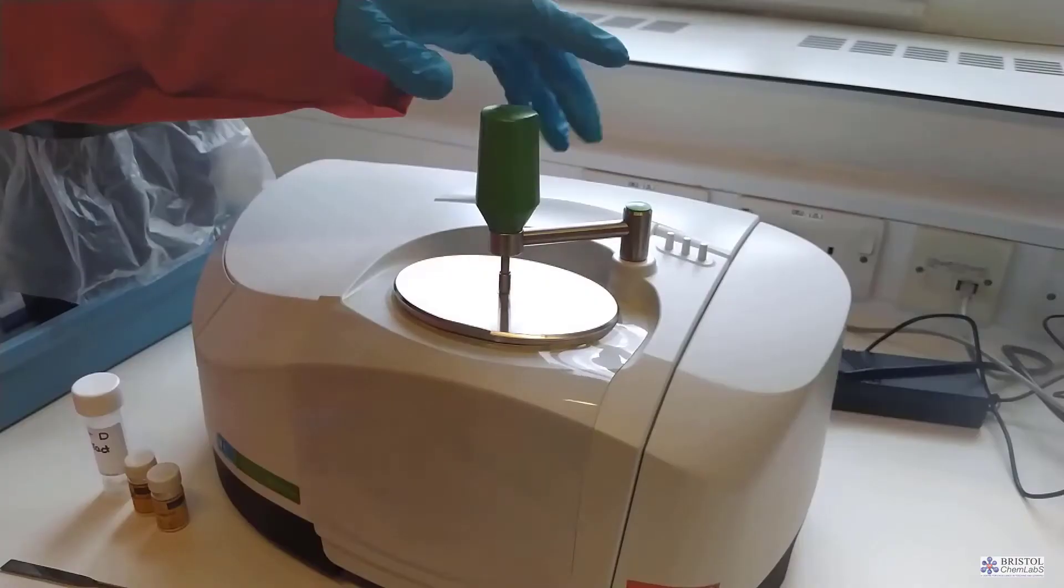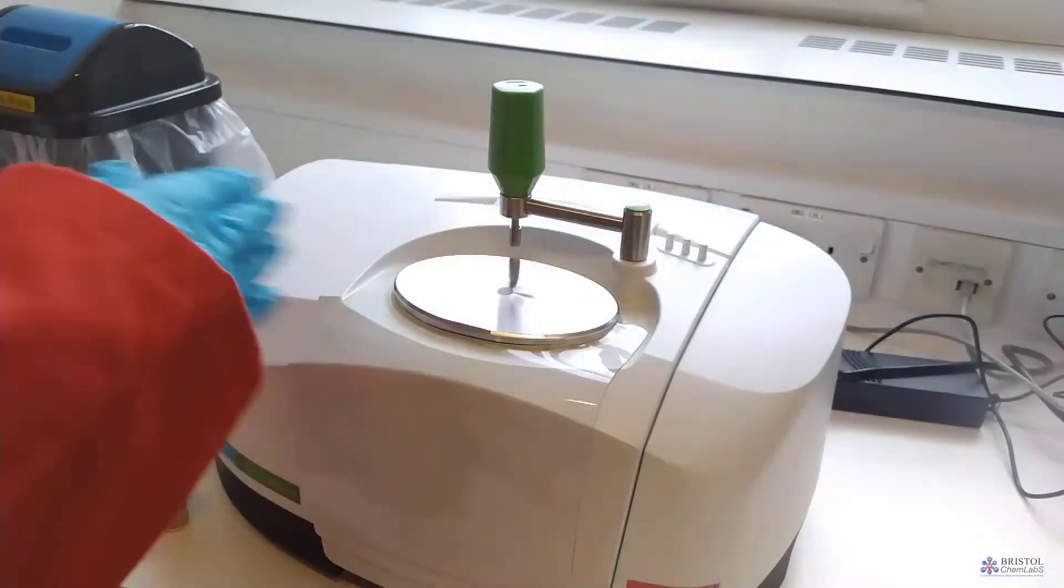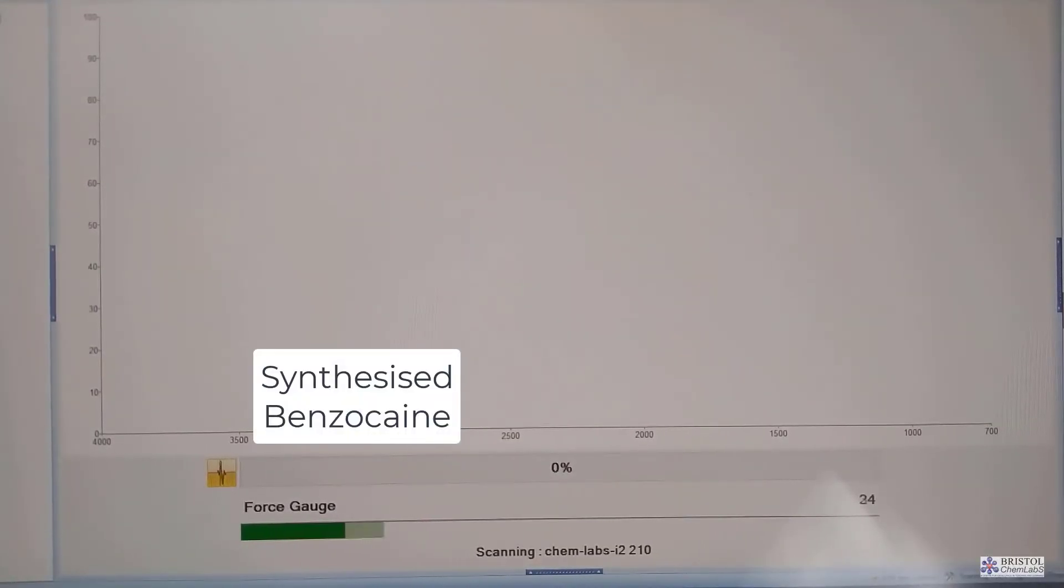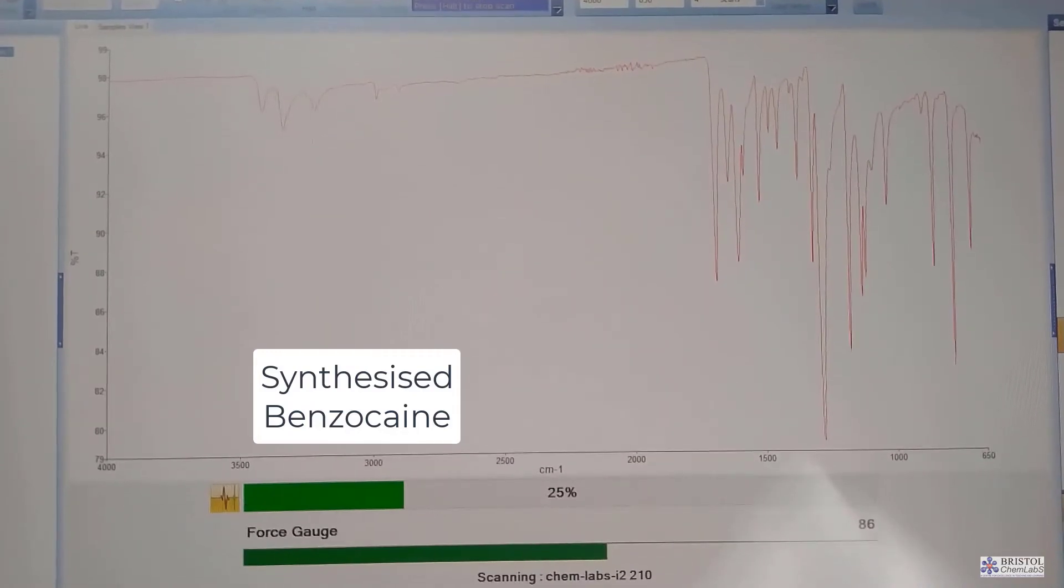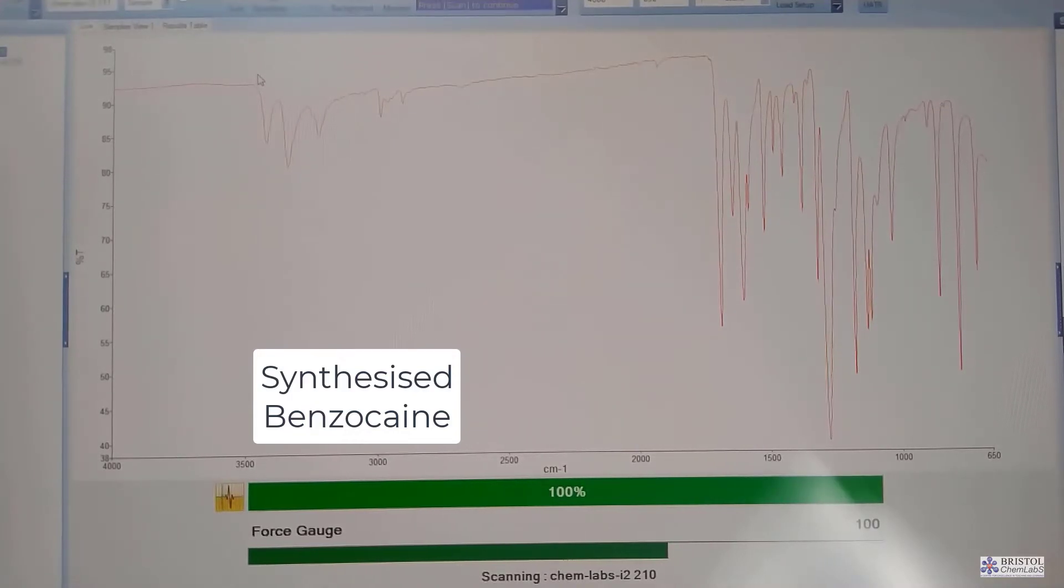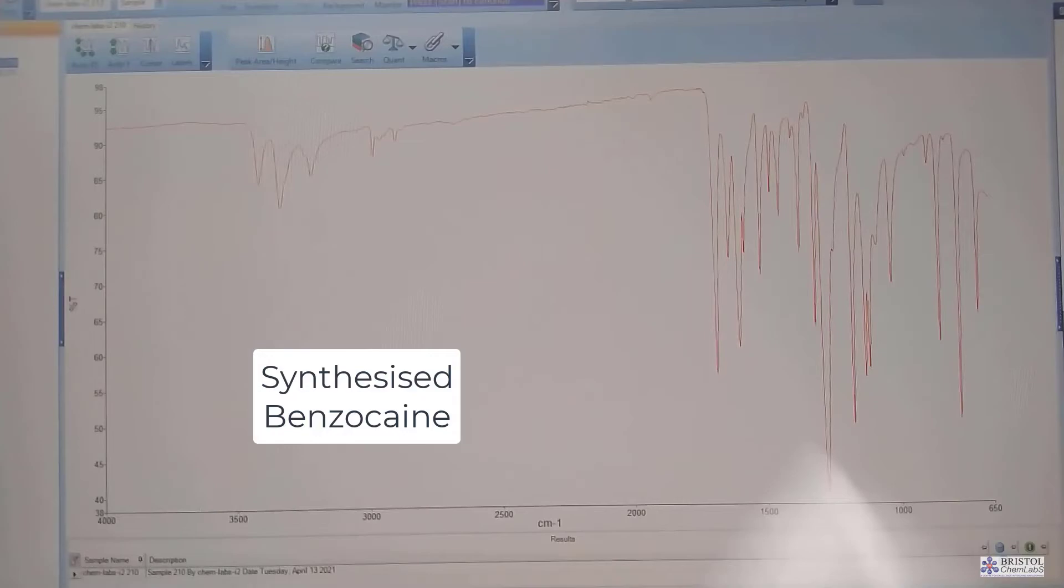Before we run a sample we do a background test. We simply let the infrared spectrometer know the air that we are using which happens to be the air in the laboratory. The software allows this spectrum of air to be removed from the sample. Of course between sample crystals there will be some air trapped. When this is done we put a small amount of our product under test onto the diamond, screw down the mirror and set the spectrometer off. The spectrometer here is usually set to run four scans, remove any anomalies and remove the spectrum of air.